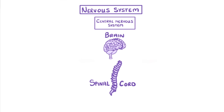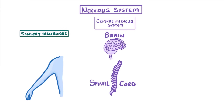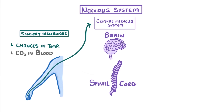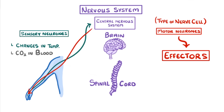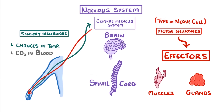To do this, it needs information about what's happening in the rest of the body, which it receives through sensory neurons. These carry information from receptors all over our body to the central nervous system — for example, information about changes in temperature or the level of carbon dioxide in our bloodstream. Once our CNS has decided what to do, it sends impulses back out to the body via motor neurons to effectors, which are generally muscles or glands, that could be told to contract or to release hormones.